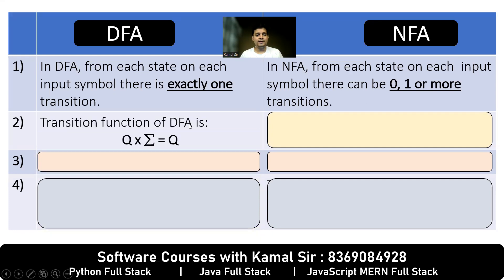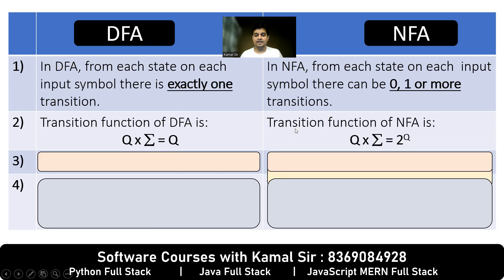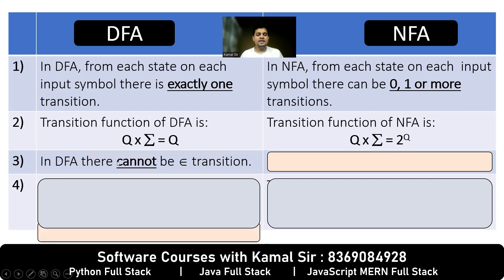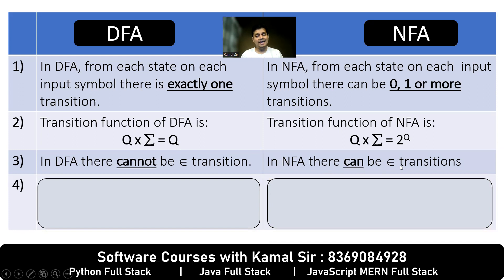Point number 2: the transition function of DFA, given a state and the input, returns the next state. For NFA, given a state and the input, it returns the possible states. Additionally, in DFA there cannot be epsilon transitions, whereas in NFA there can be epsilon transitions.